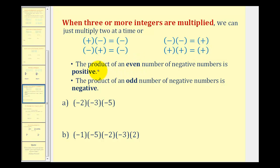But there is a shortcut. The product of an even number of negatives is positive, and the product of an odd number of negatives is always negative.